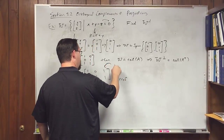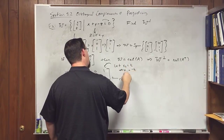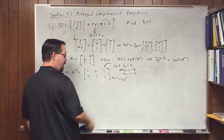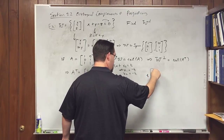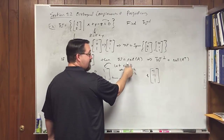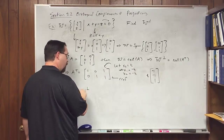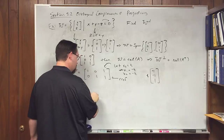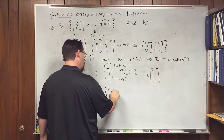Let x3 equal t, which means x1 equals negative t and x2 equals negative t, by moving those terms to the other side. So we end up with t times (−1, −1, 1). Factoring out t, W⊥ — the null space of A transpose — is the span of (−1, −1, 1).